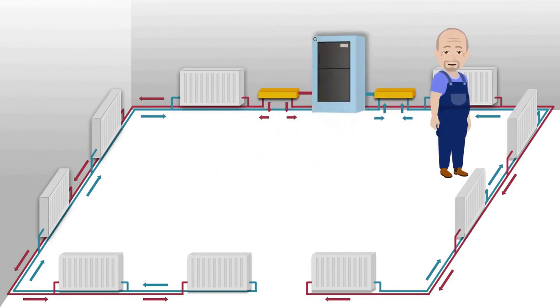After the manifold, one pipe is connected to these radiators and the other pipe is connected to these radiators. In the same way, the return is connected through a double distributor.